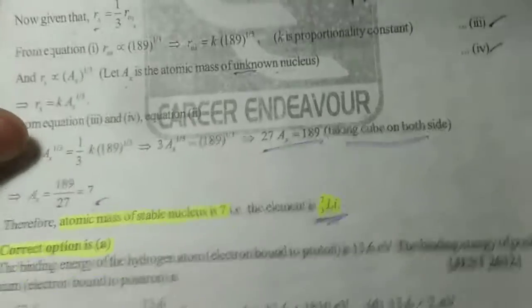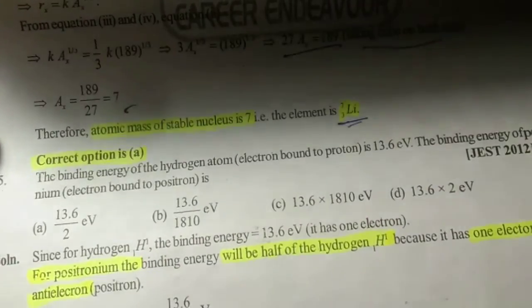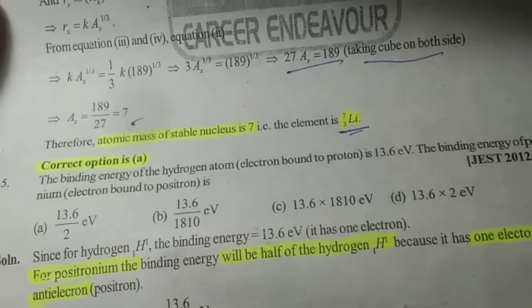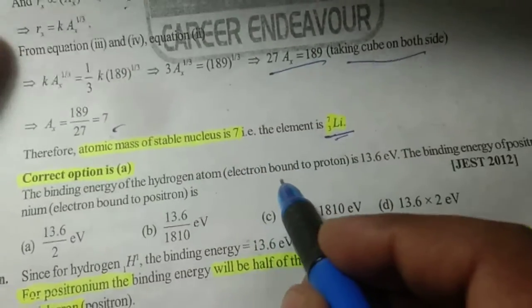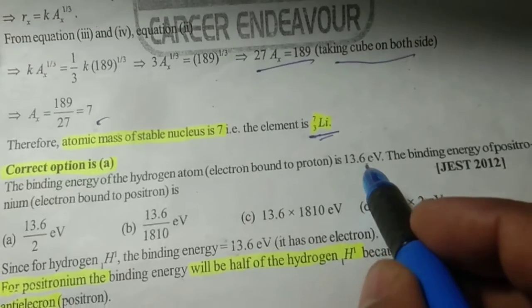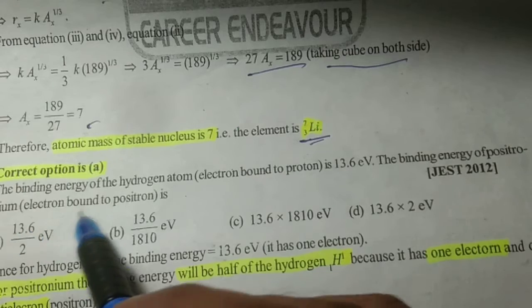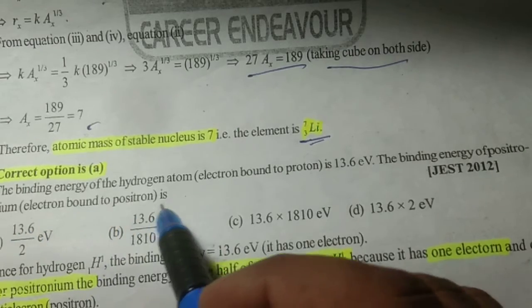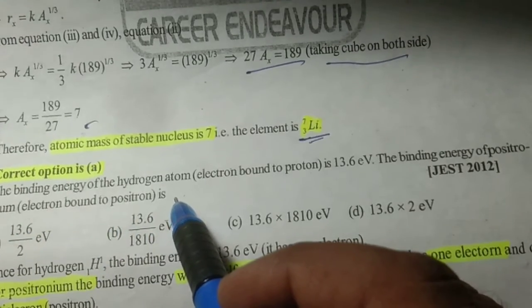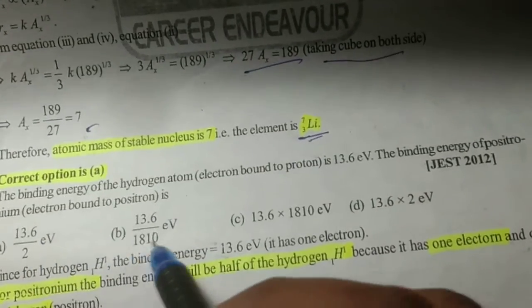Now the next question: the binding energy of a hydrogen atom — meaning an electron bound to a proton — is 13.6 electron volts. The binding energy of positronium, which is an electron bound to a positron, is what? The first option is 13.6 divided by 2 electron volts.